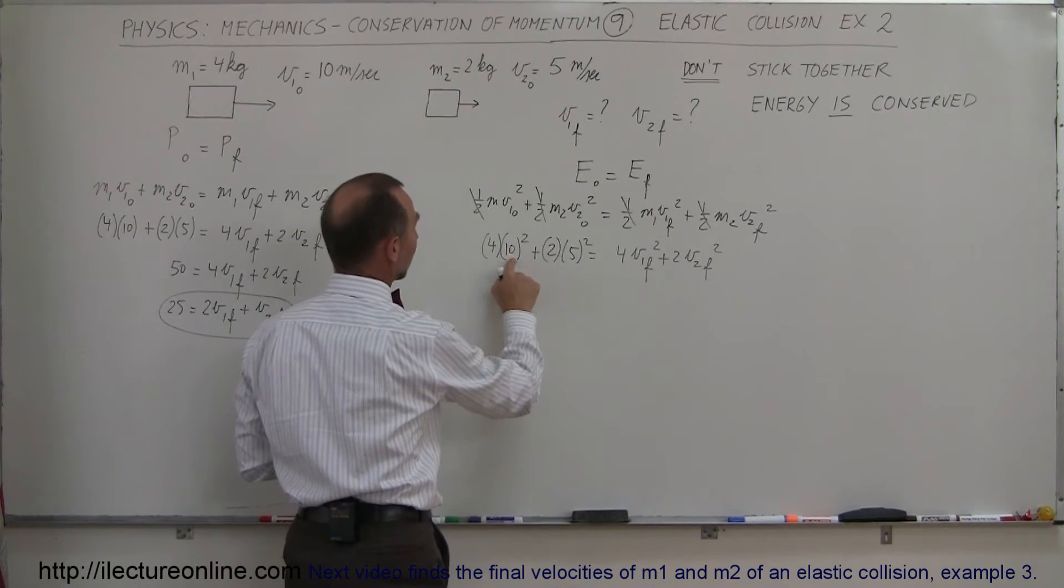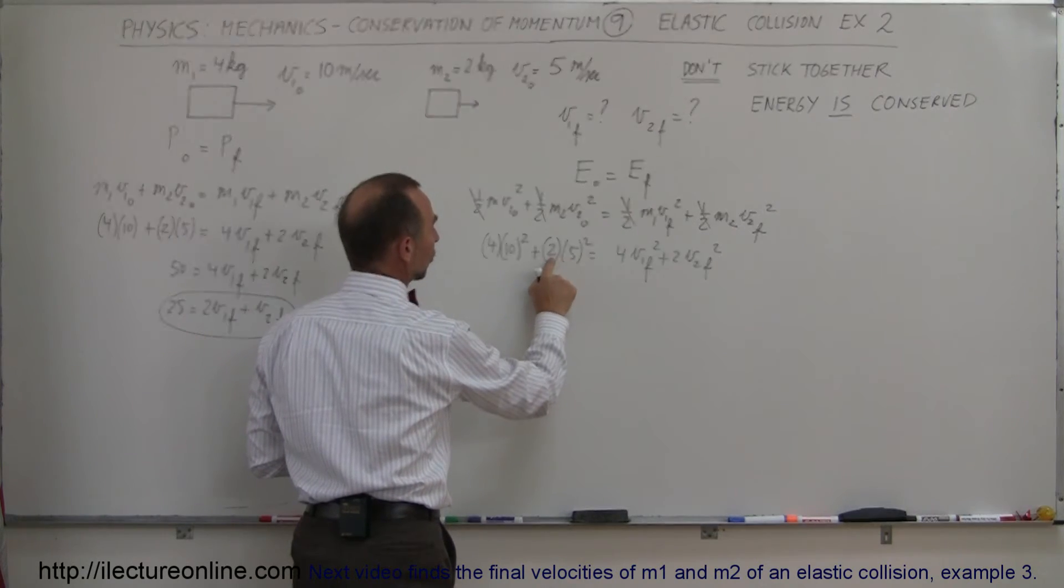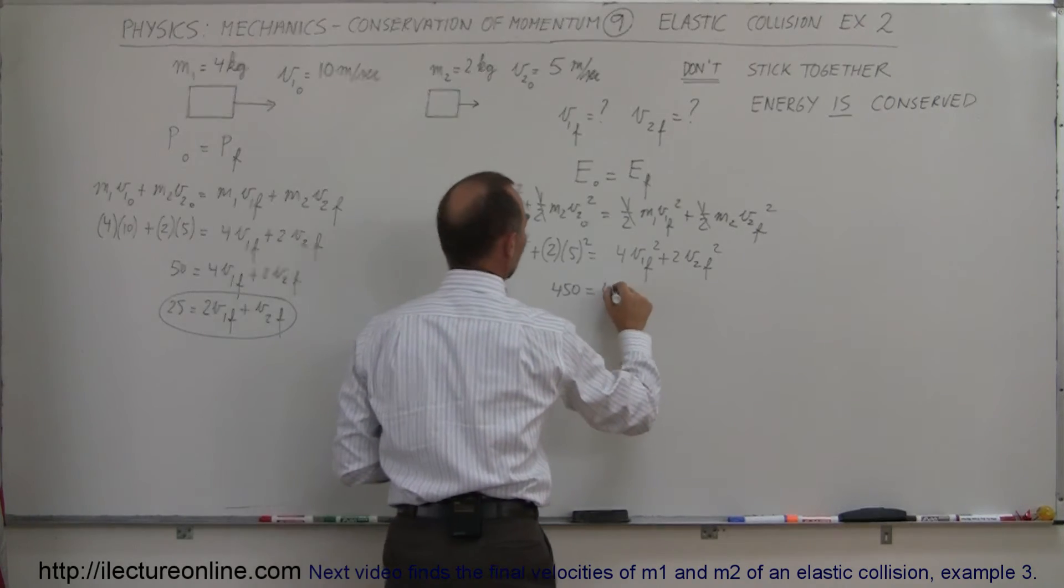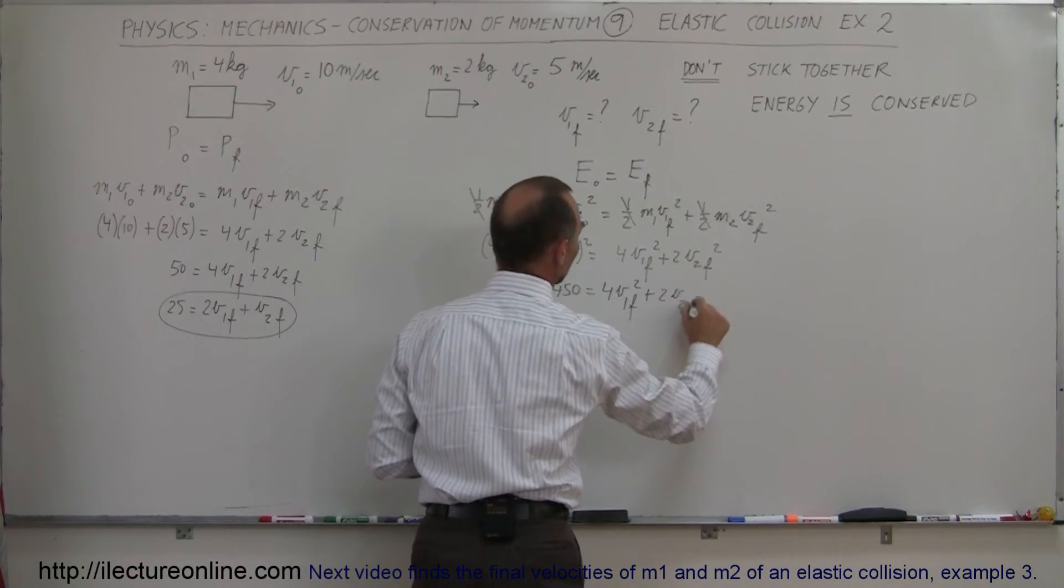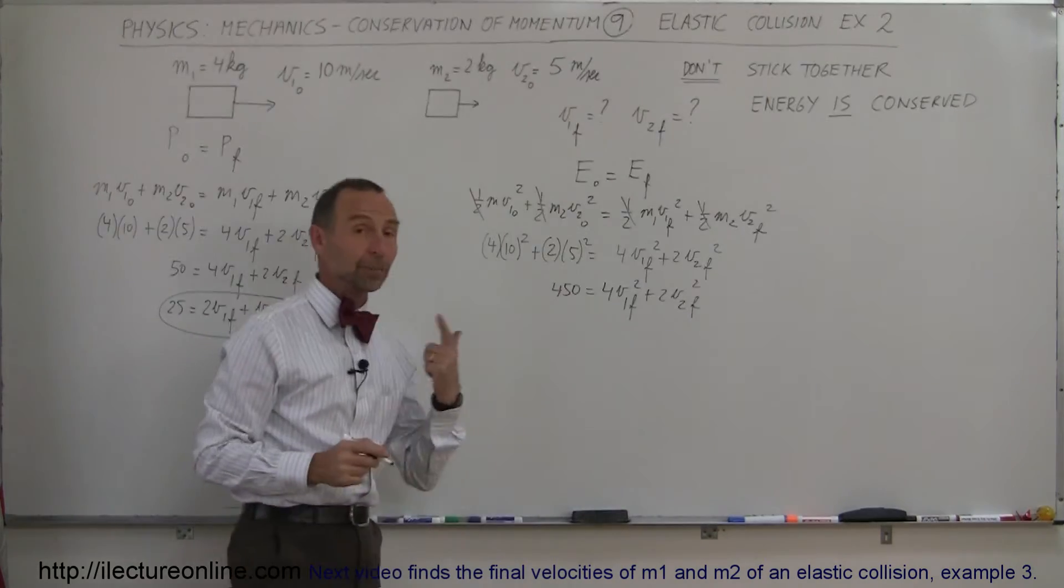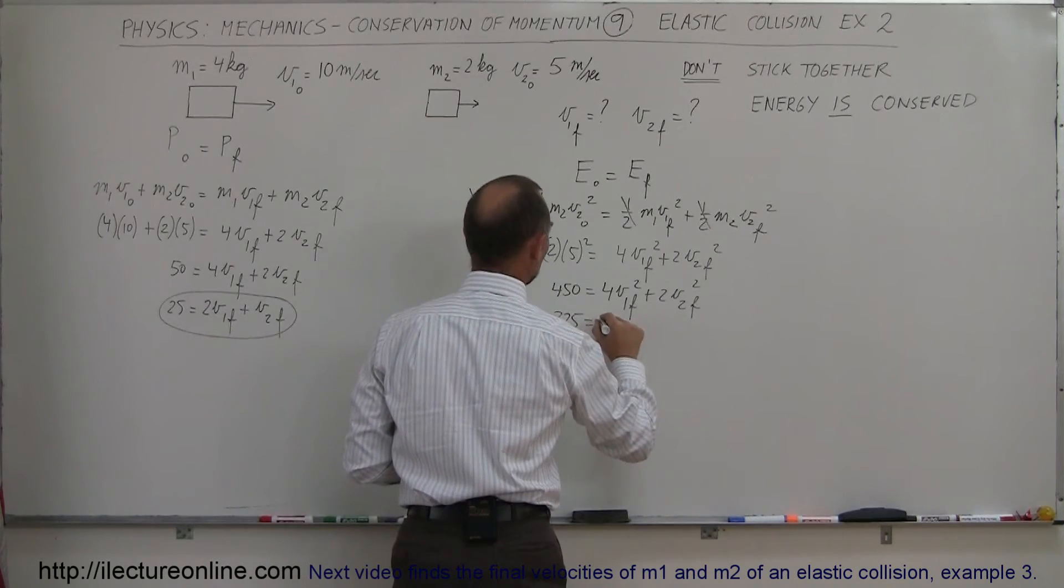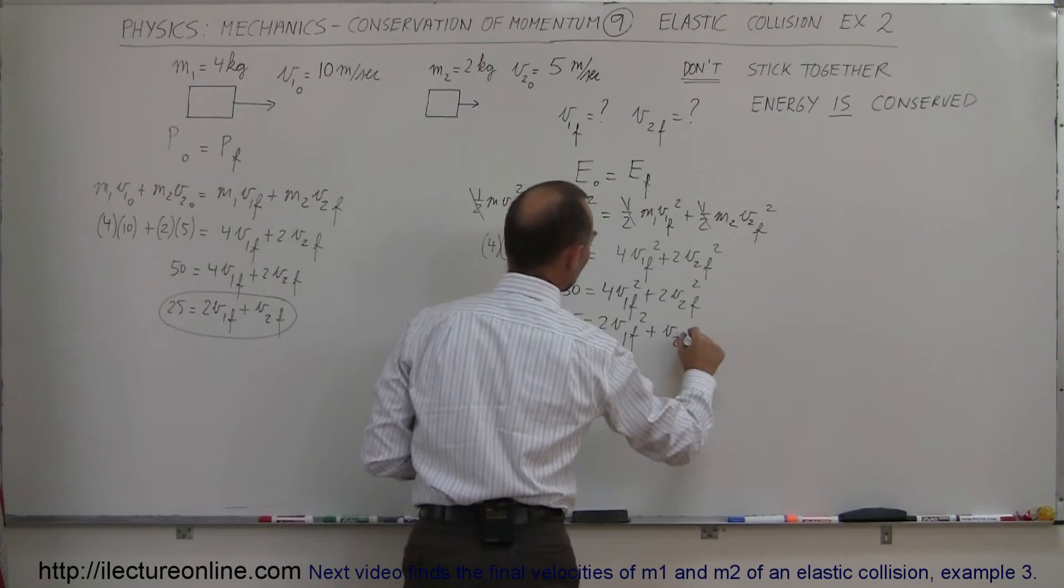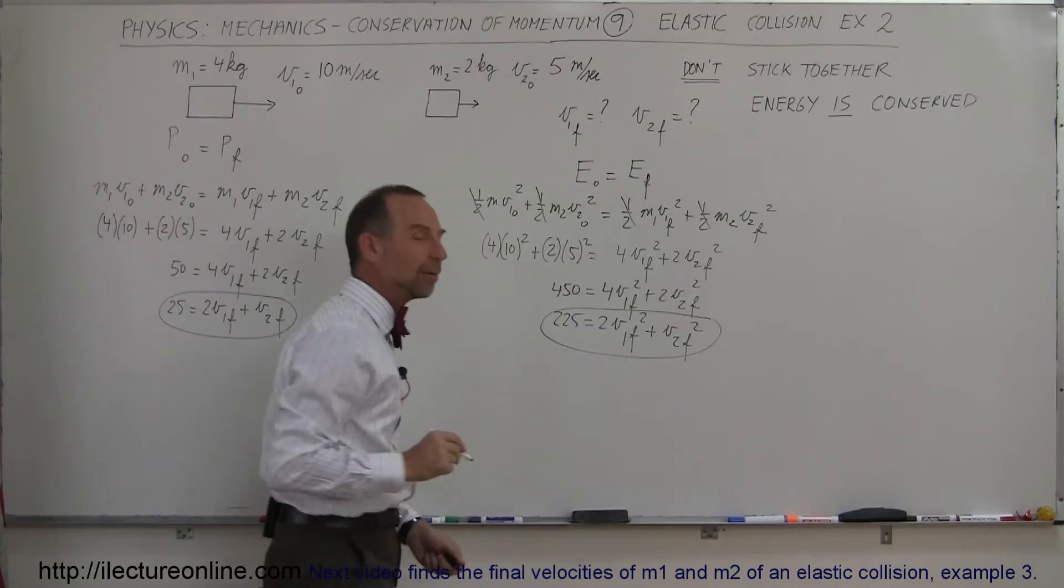That would be 100 times 4, that's 400, 25 times 2 is 50, that would be 450 is equal to 4 V1 final squared plus 2 V2 final squared, and finally I can also divide both sides by 2, and this gives me 225 equals 2 V1 final squared plus V2 final squared. And so there we have our second equation with the same two unknowns.